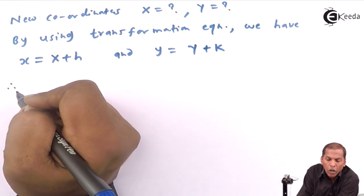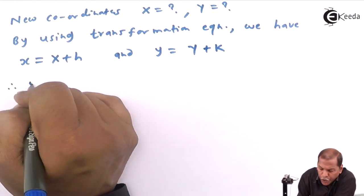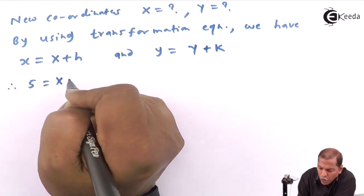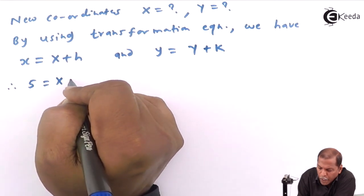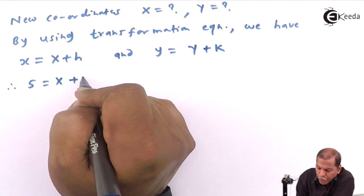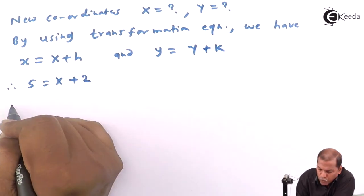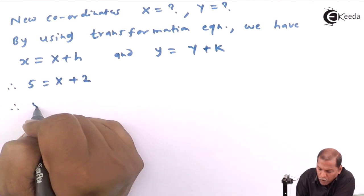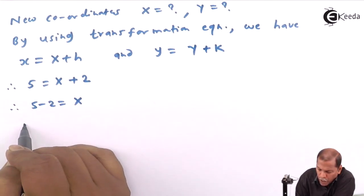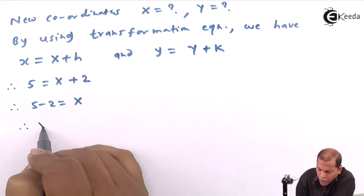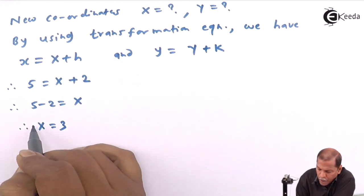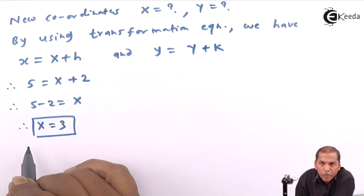For small x, we substitute 5 equal to capital X plus h, and for h we substitute 2. Therefore 5 minus 2 is equal to capital X, and therefore capital X is equal to 3.